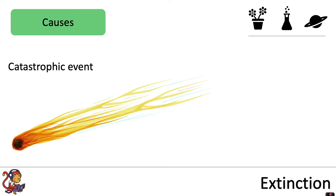There could be one single catastrophic event, for example a meteorite striking the planet, and this could cause a change in environment or change in climate which means a species is no longer able to survive.